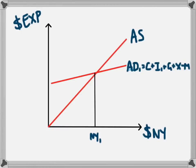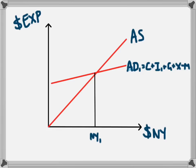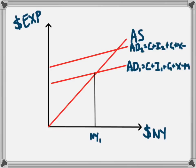This translates into the third diagram. We have an equilibrium level of national income at NY1, coming from aggregate demand level AD1, which equals C plus I1 plus G plus X minus N. We know from the previous diagram that I1 has increased to I2 as a result of the decreased interest rate. So we get a new, higher level of aggregate demand: AD2, equal to C plus I2 plus G plus X minus N. The increase in investment from I1 to I2 shifts aggregate demand from AD1 to AD2, moving national income from NY1 to NY2.